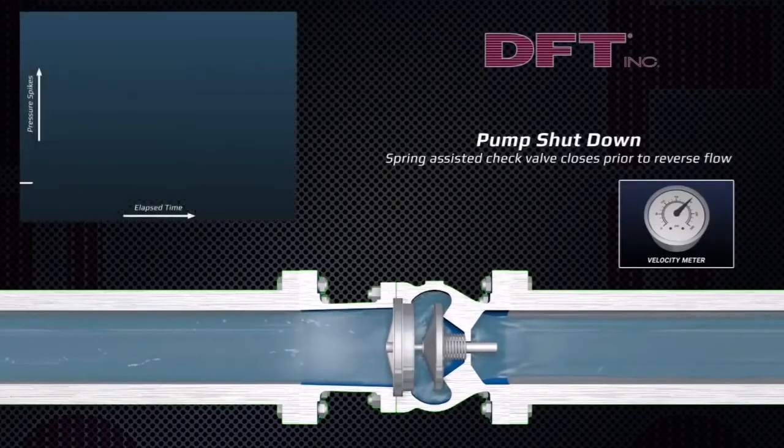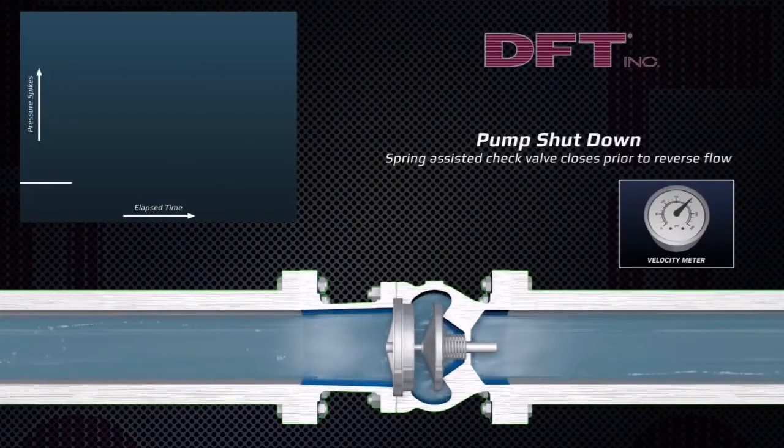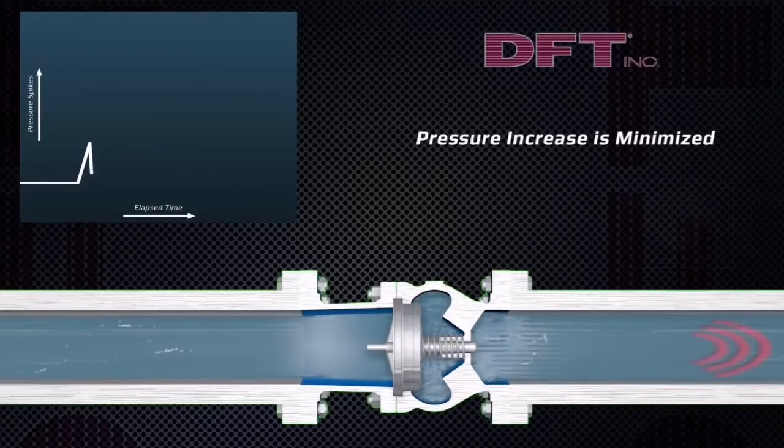When the pump shuts down, the spring-assisted silent check valve closes ahead of reverse flow before fluid momentum changes direction, thereby significantly reducing water hammer.